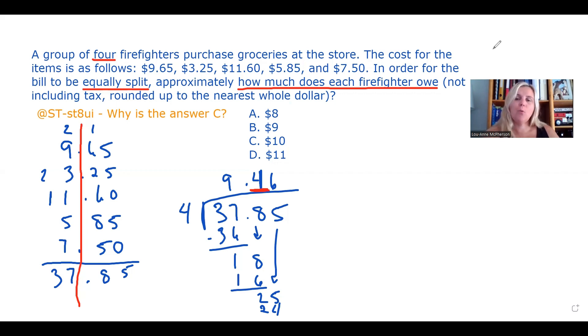The thing I want to draw your attention to is in the question, it tells you to round up. It's not just saying round to the nearest whole number. It's saying round up to the nearest whole number. So because of that, you want to follow instructions. And in this case, that's going to bring your answer to $10, which is going to give you C.